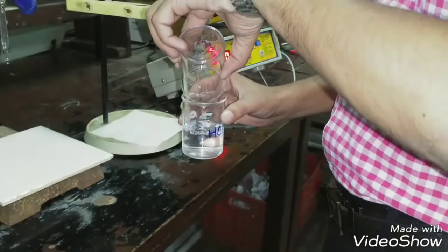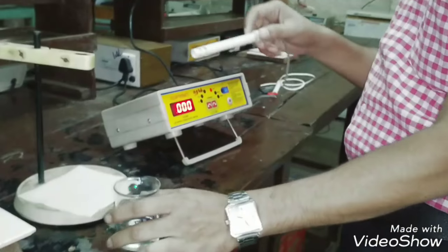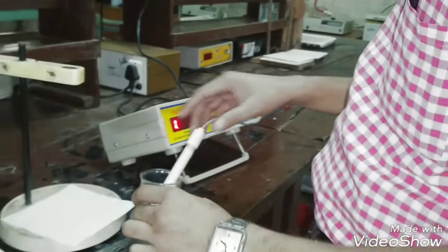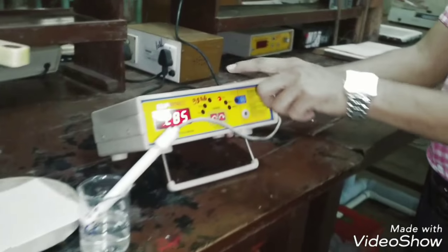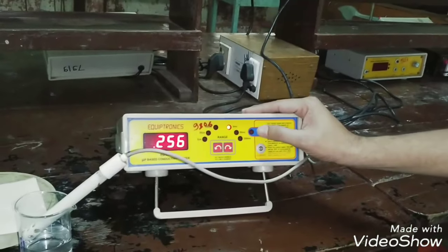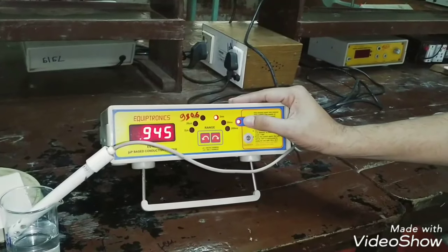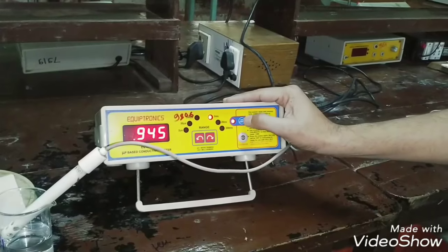Here we take 10 ml HCl in a clean 100 ml beaker. To that we add 40 ml distilled water and in it we dip conductivity cell. The conductivity cell is connected to conductivity meter. Here this conductivity meter is standardized to 0.99 or 1 mmol.